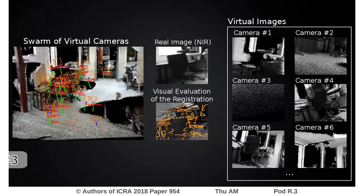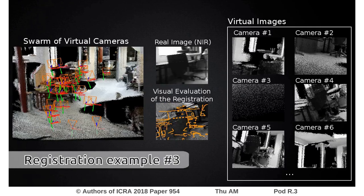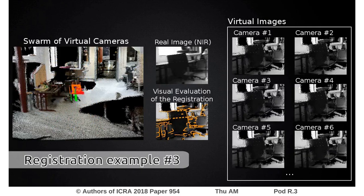Thanks to the mutual improvement performed by both geometrical and dense visual features, all the virtual cameras of the swarm converge to the same estimated pose, leading to a precise alignment between the 3D model and the near-infrared images.